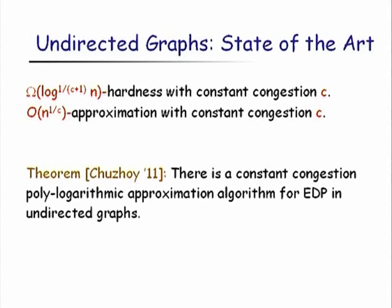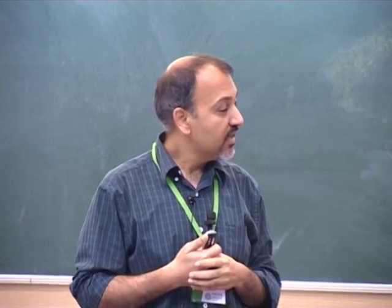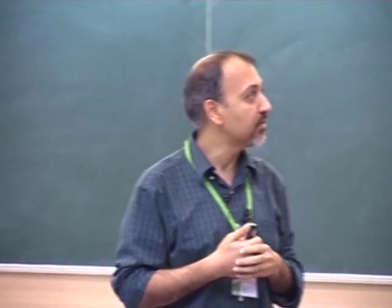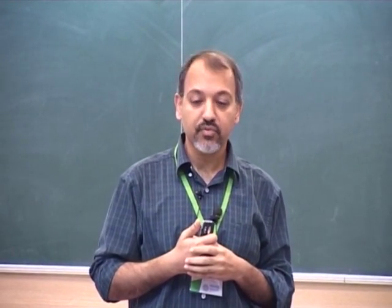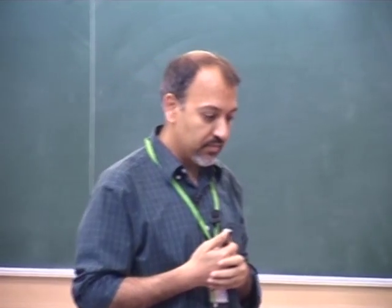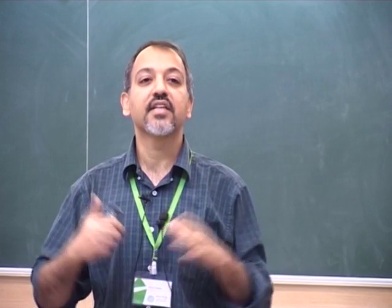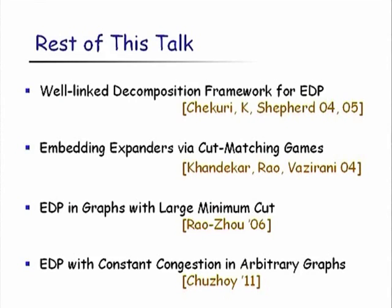This gap has essentially disappeared with the remarkable result of Julia Chuzhoy, which shows that with constant congestion it is possible to get a polylogarithmic approximation to EDP in undirected graphs. The truth was really closer to the hardness results. This result builds strongly on developments from the last six or seven years and adds powerful new machinery.